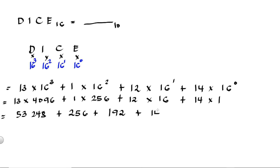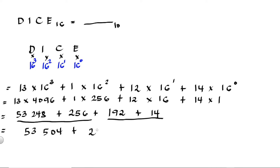So 3,328 plus 192 plus 14 is equal to 3,534. Then the decimal equivalent of 1CE hex is 462 decimal. This is the decimal result.